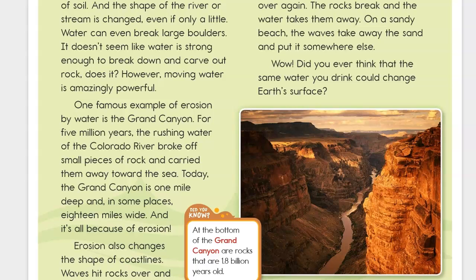Erosion also changes the shape of coastlines. Waves hit rocks over and over again. The rocks break and the water takes them away. On a sandy beach, the waves take away the sand and put it somewhere else.